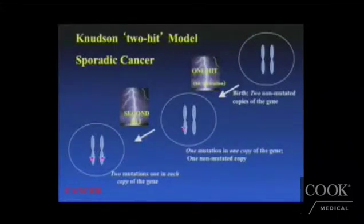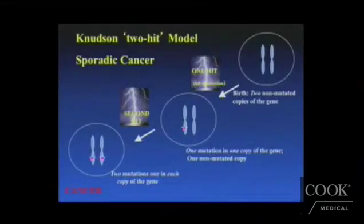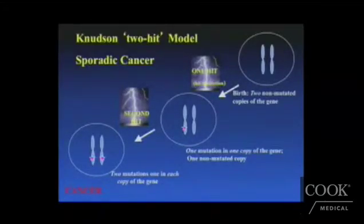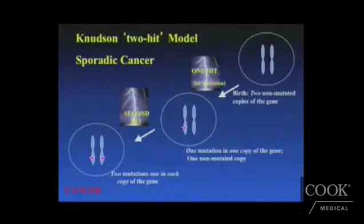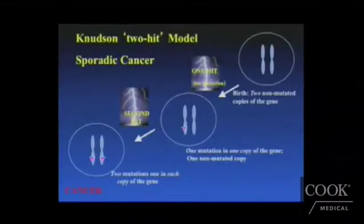Let's look at the genetic model behind the development of colon cancer. In a patient who has sporadic colon cancer — this means no personal risk factors or comorbidities associated with colon cancer and no family members with colon cancer — what happens in those patients?